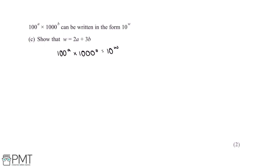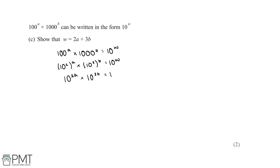The way to do this is to write 100 and 1000 as 10 to the power of something. 100 is equal to 10 squared, so we can rewrite 100 to the power of a as 10 squared, all to the power of a. Next, 1000 to the power of b — 1000 can be rewritten as 10 cubed, all to the power of b. So 10 squared to the power of a gives us 10 to the power of 2a, and 10 cubed to the power of b gives us 10 to the power of 3b, and this is all equal to 10 to the power of w.